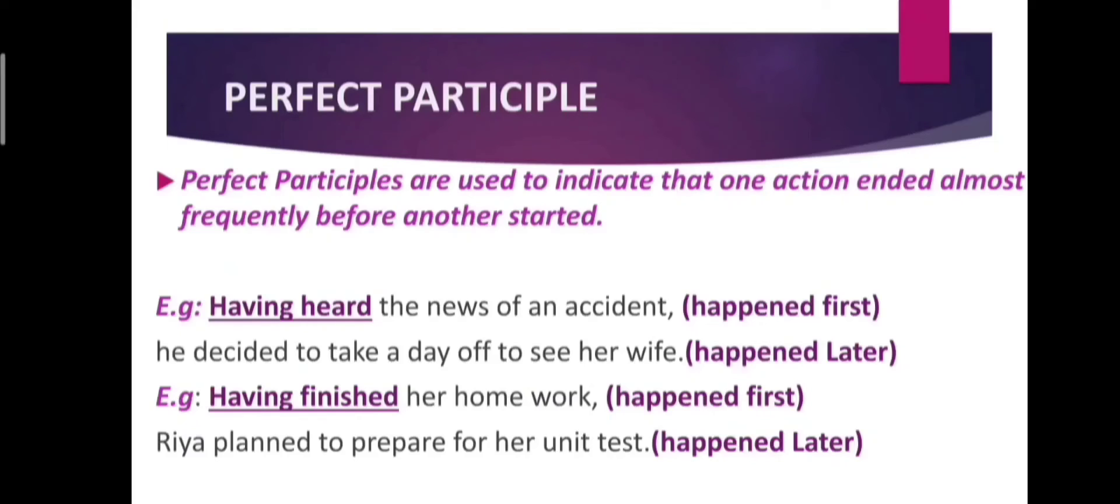Example number two. Having finished her homework, Ria planned to prepare for her unit tests. Having heard and having finished in both of the sentences are known as perfect participle.